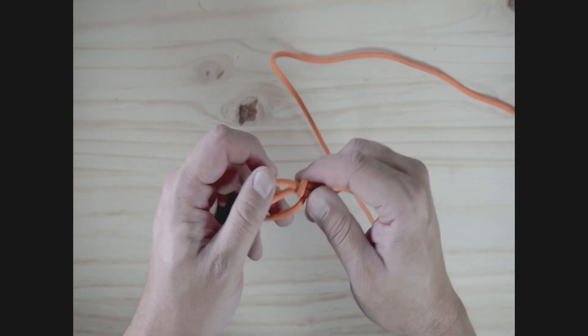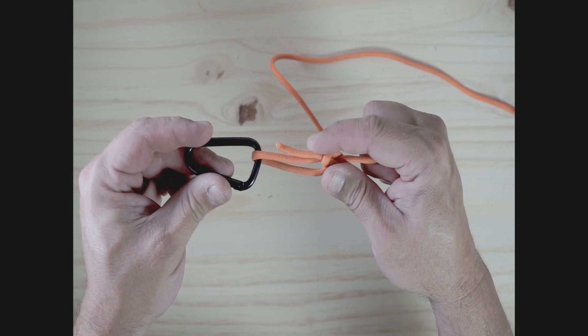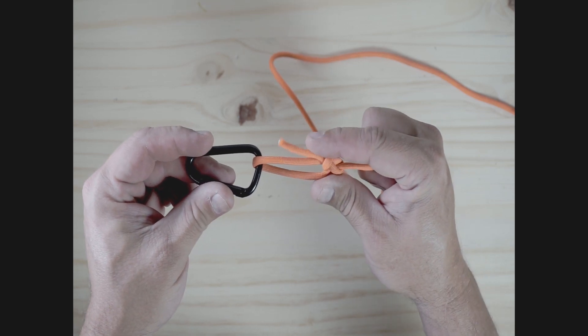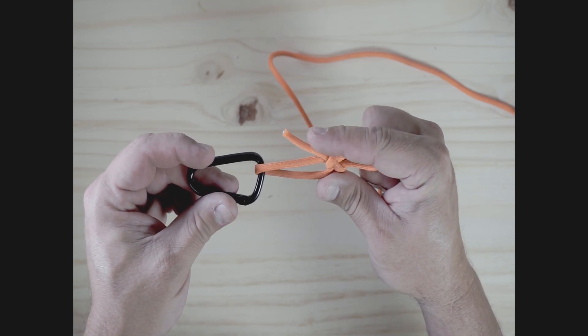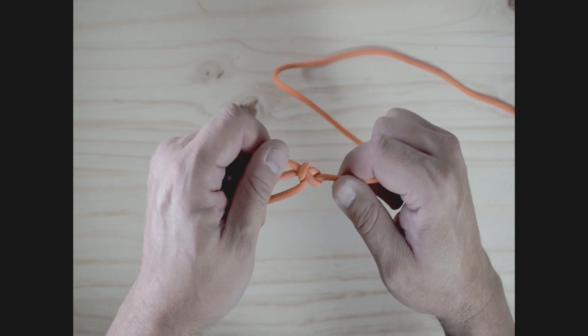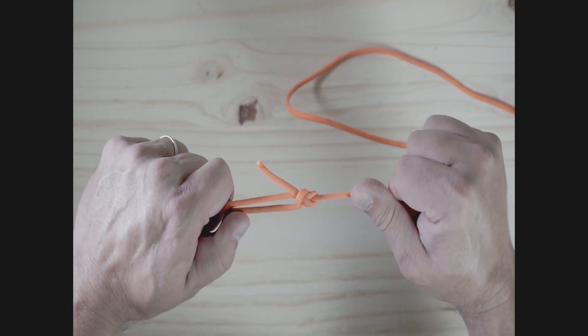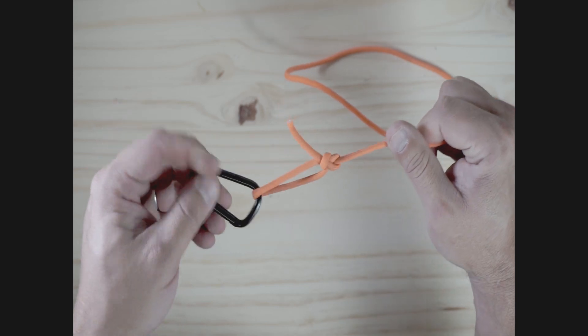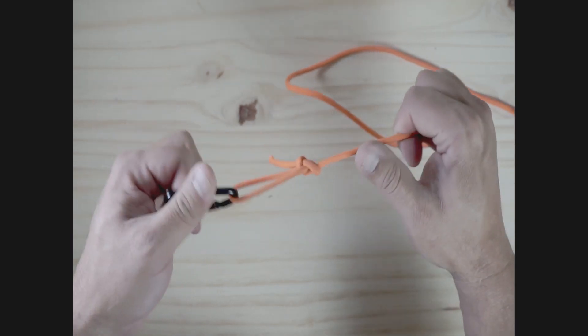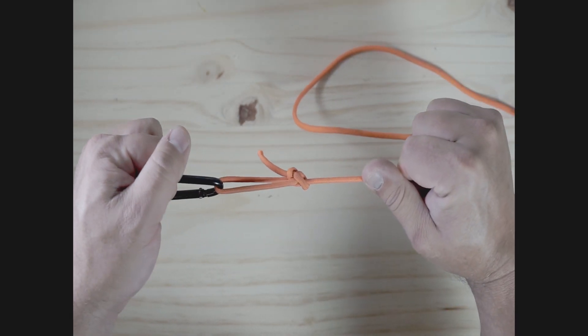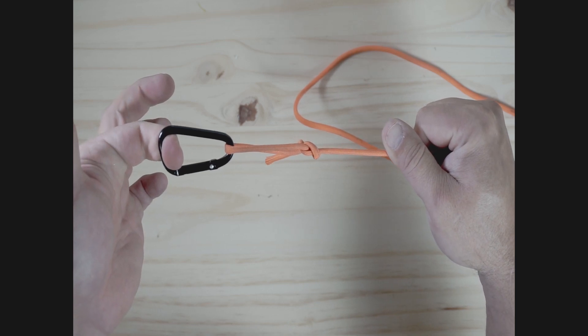You can snip off this tag end, but again, you'll notice the tag end points down away to the lure. That makes it fairly weedless, kind of stays out of the way. If you want to, you can snip it. I'm a little OCD about that, so I like to snip it pretty tight. But again, you have a super strong loop knot, super easy to tie, and there it is, the Canoe Man Loop Knot.